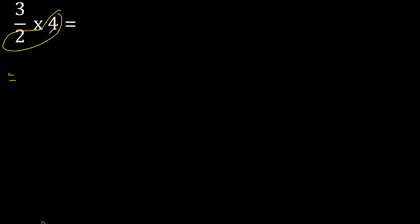4 and 2 can be simplified because they can be divided by the same number. Divided by 2: 4 divided by 2 is 2, and 2 divided by 2 is 1.